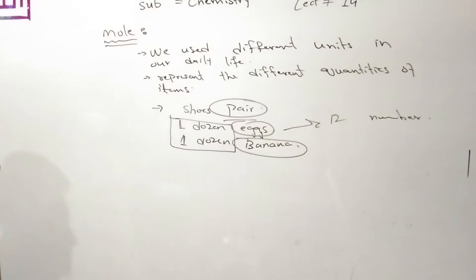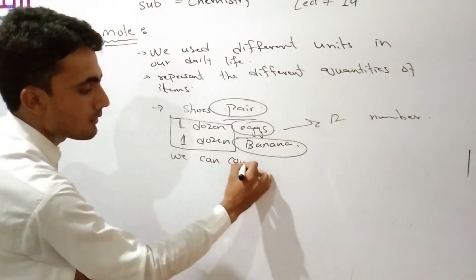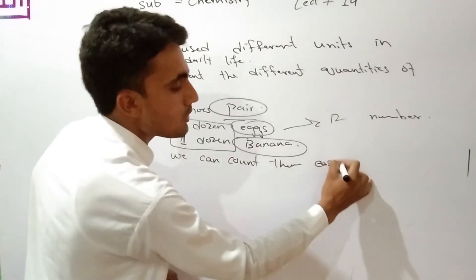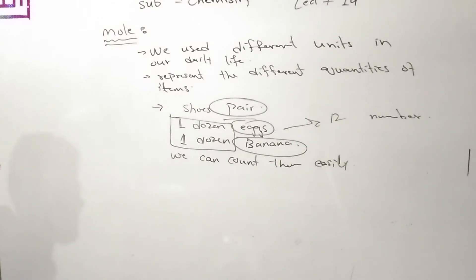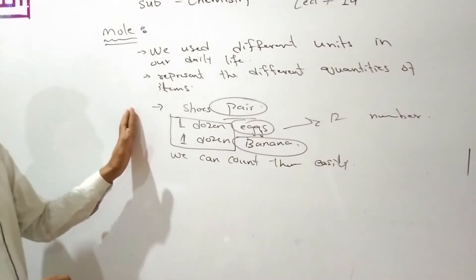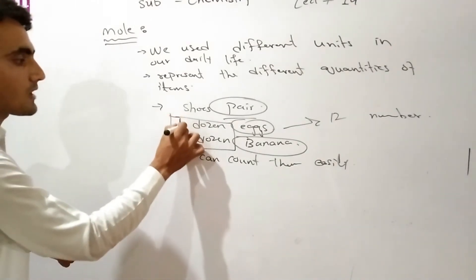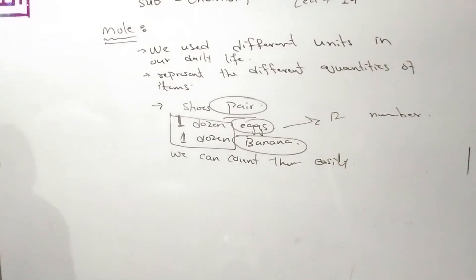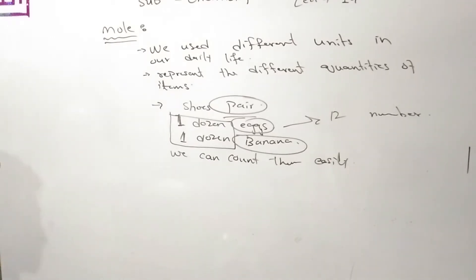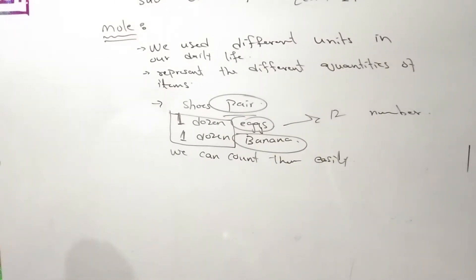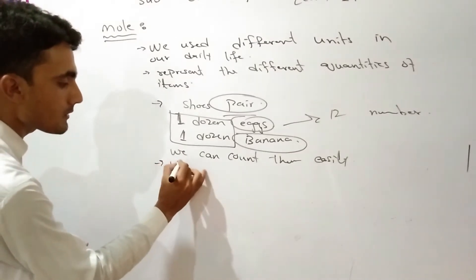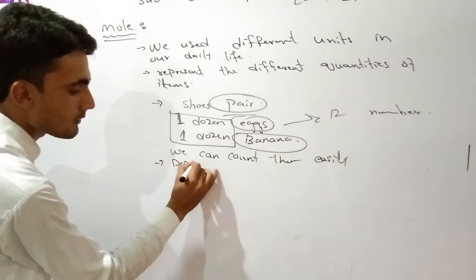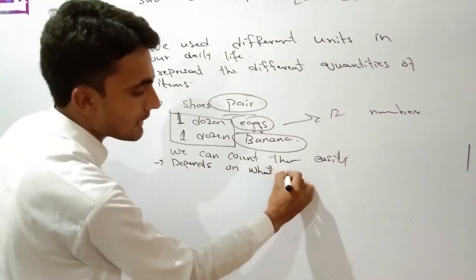We can count them easily using that unit. Counting units depend on what we are counting. We use units like a dozen so that we can represent and count things easily.